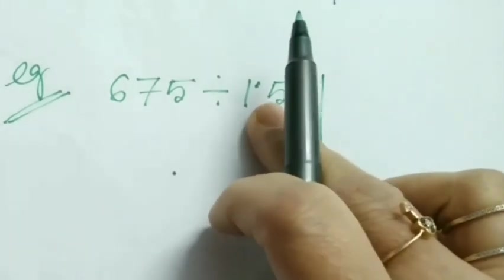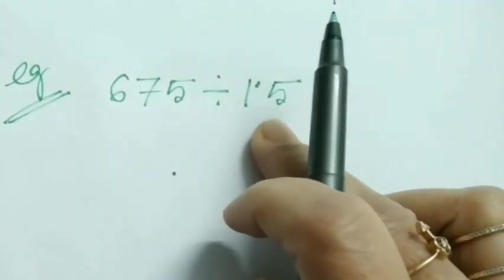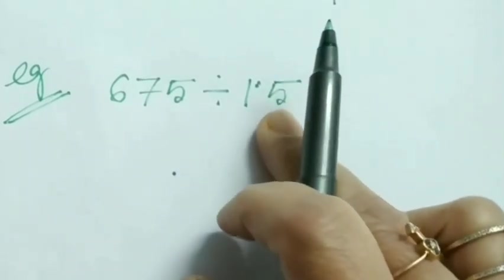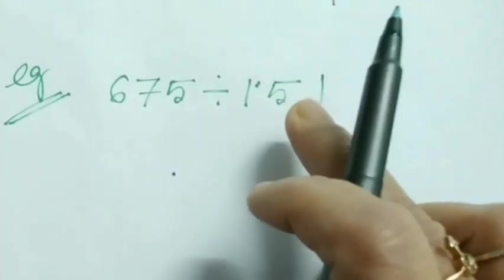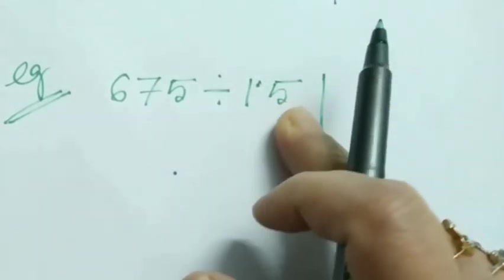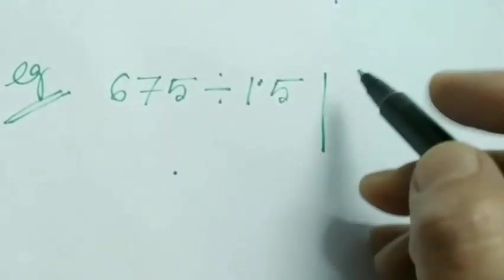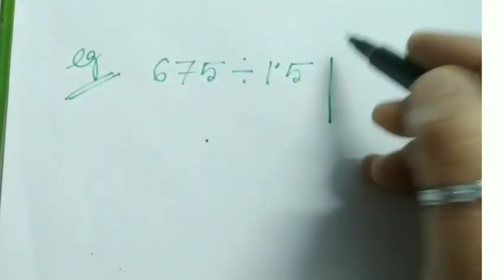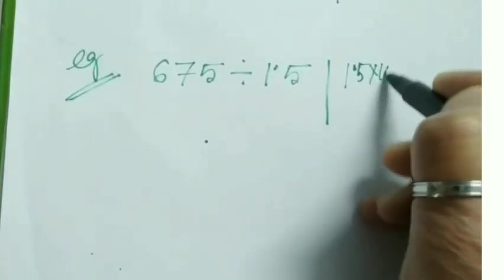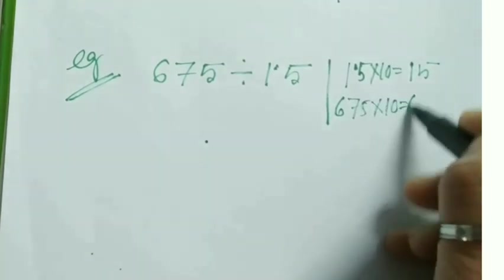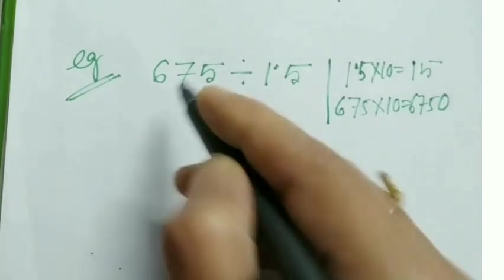We need to multiply the divisor by 10 if it contains one decimal place, by 100 if it contains two decimal places, and so on. This divisor contains one decimal place, so we multiply by 10. At the same time, we need to multiply our dividend by 10 also. So 1.5 × 10 = 15, and 675 × 10 = 6750. Our new question will be 6750 divided by 15.